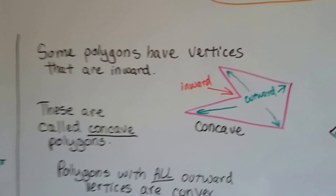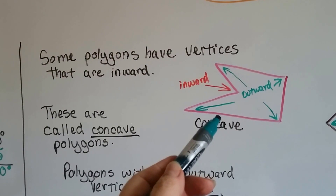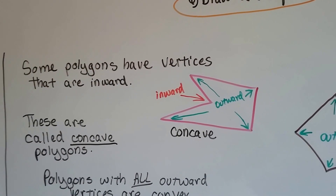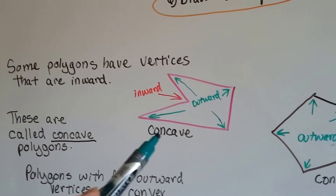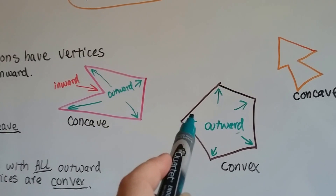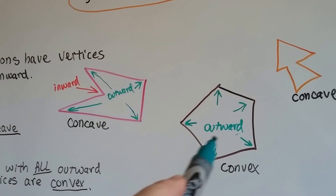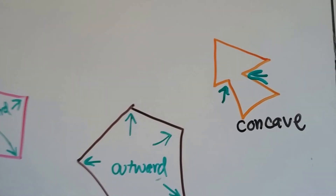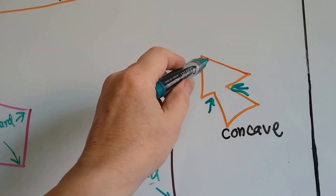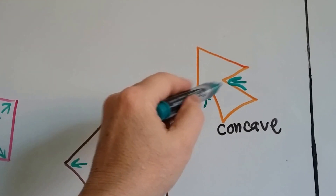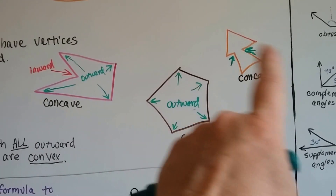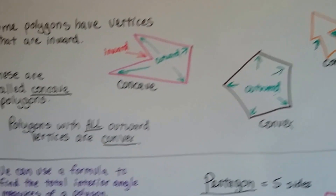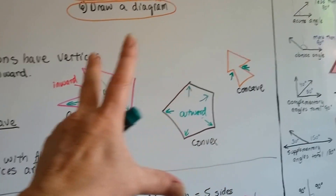Some polygons have vertices that point inward — that's called a concave polygon. These angles go outward, but it has one going inward. It could be a twelve-sided polygon with two or three going inward. When all angles punch outward, that's called convex. Inward is concave, outward is convex. It doesn't matter how many are going inward — one, two, three — the minute it has one going inward, it makes it concave. Polygons with all outward angles are convex.